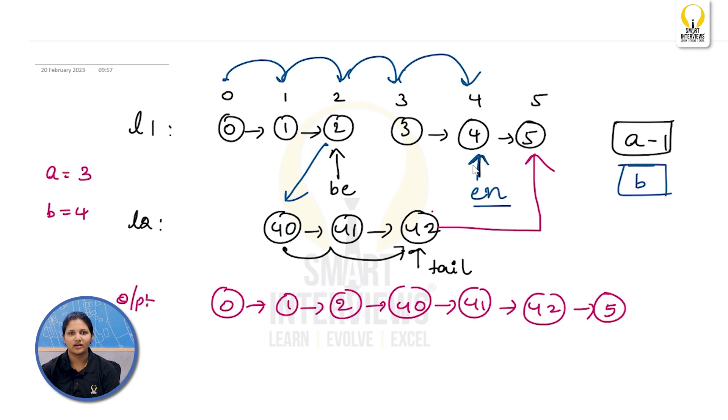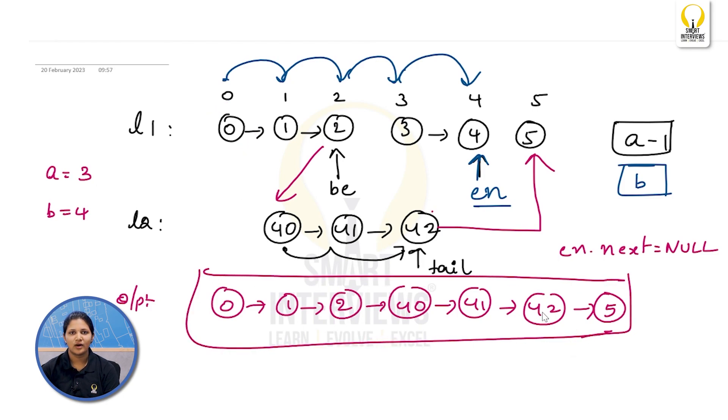Now, this is how your list will look like. So, if you return this 0, you are returning 0, 1, 2. 2 is connected to 40, then 41, 42 and your 5. But, you still have these things, right? So, it is a good practice to even break this connection. How can that be done? Which pointer will help you that? En pointer will help you that. What is the syntax for it? You can simply say that en.next is equals to null. If you write this statement, this connection is lost. Simply, you are going to return this head now, which will give you the required output. So, I hope you are clear with this part.